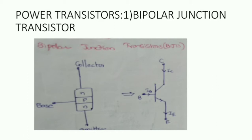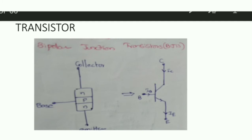Before going to power transistors, what are power diodes? Power diodes are uncontrolled devices. In other words, their turn-on and turn-off characteristics are not under our control. Power transistors, however, possess controlled characteristics. These are turned on when a current signal is given to the base or control terminal. The transistors remain in the on-state so long as the control signal is present. When this control signal is removed, the power transistor is turned off.